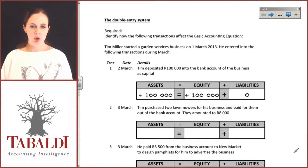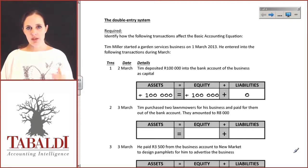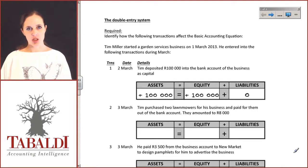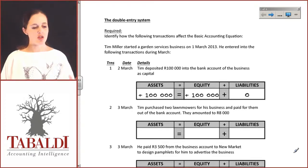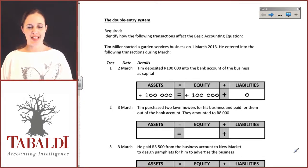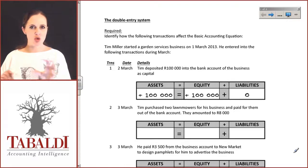The double entry system is an extremely important part of creating financial information. When we create financial information, we need to understand the effect that every single transaction has on the statement of financial position and the statement of profit or loss. It's very important to be able to identify transactions and understand that one transaction might result in two or more things happening.